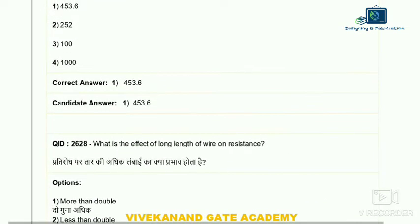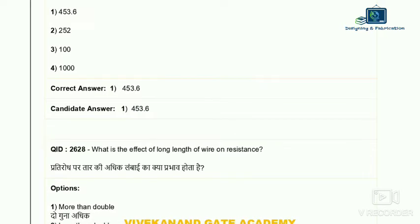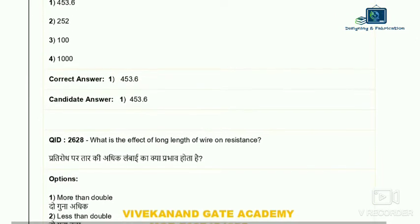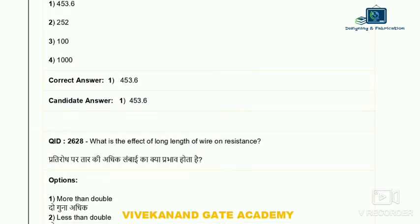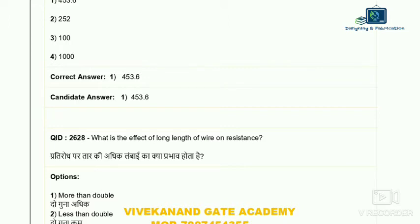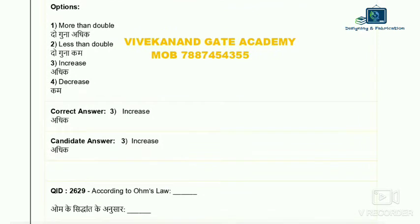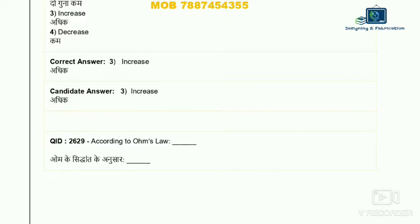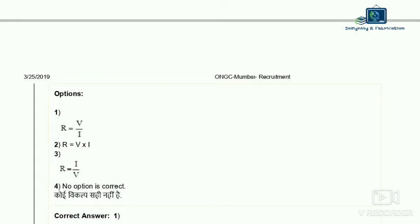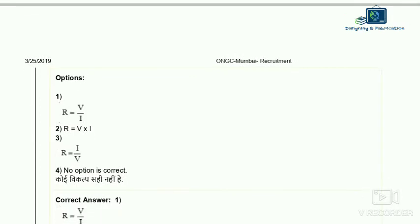Question 28: what is the effect of long wire length on resistance? As length increases, resistance increases, and current decreases — or vice versa. Question 29: according to Ohm's law, V is equal to IR, meaning voltage equals current into resistance. In terms of resistance, R equals V divided by I. So the correct answer is R = V/I.